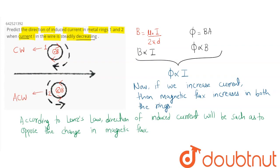So here our answer will be: in ring 1, the current will be in the clockwise direction, and in ring 2, the current will be in the anticlockwise direction. Hence, our answer.